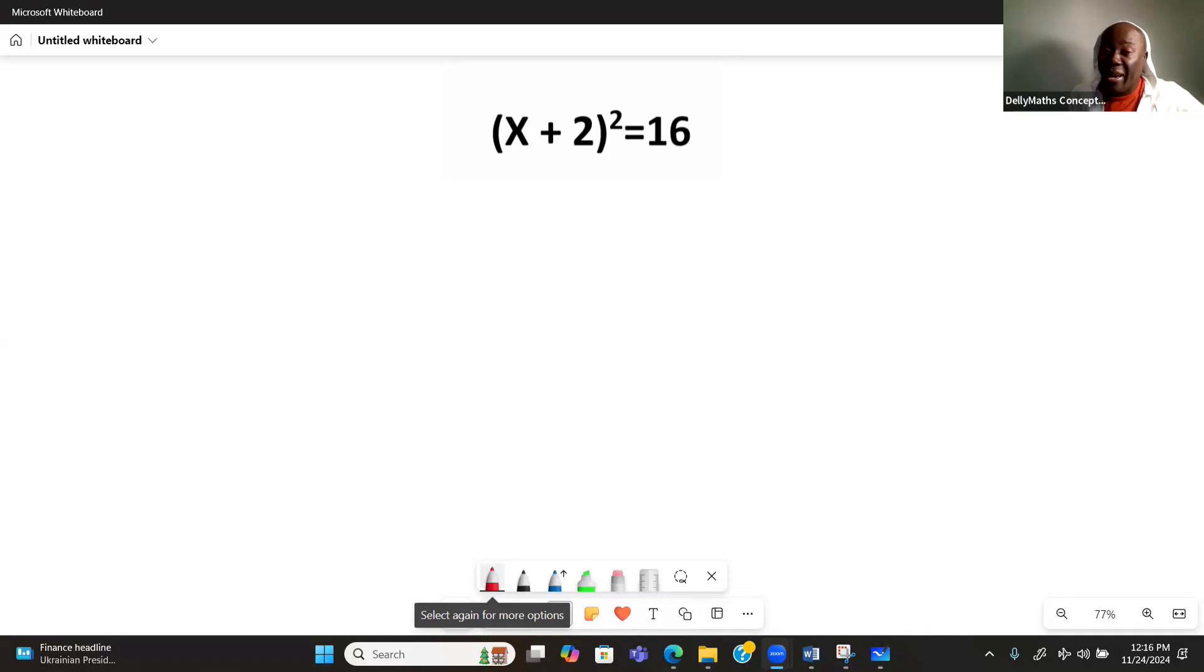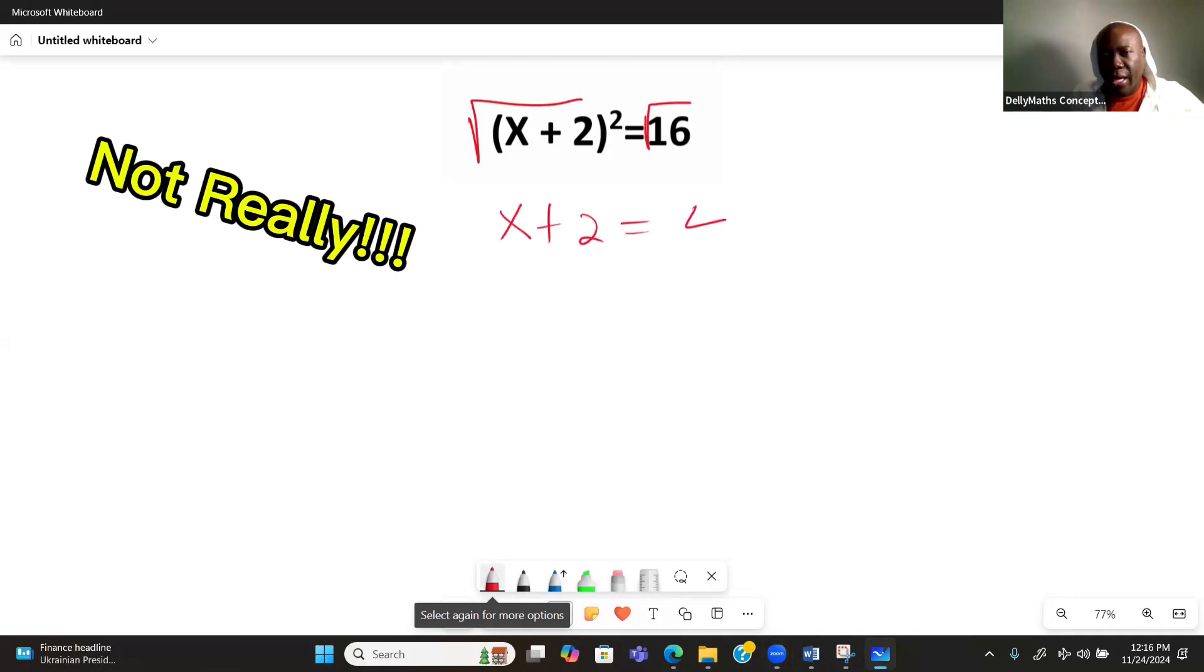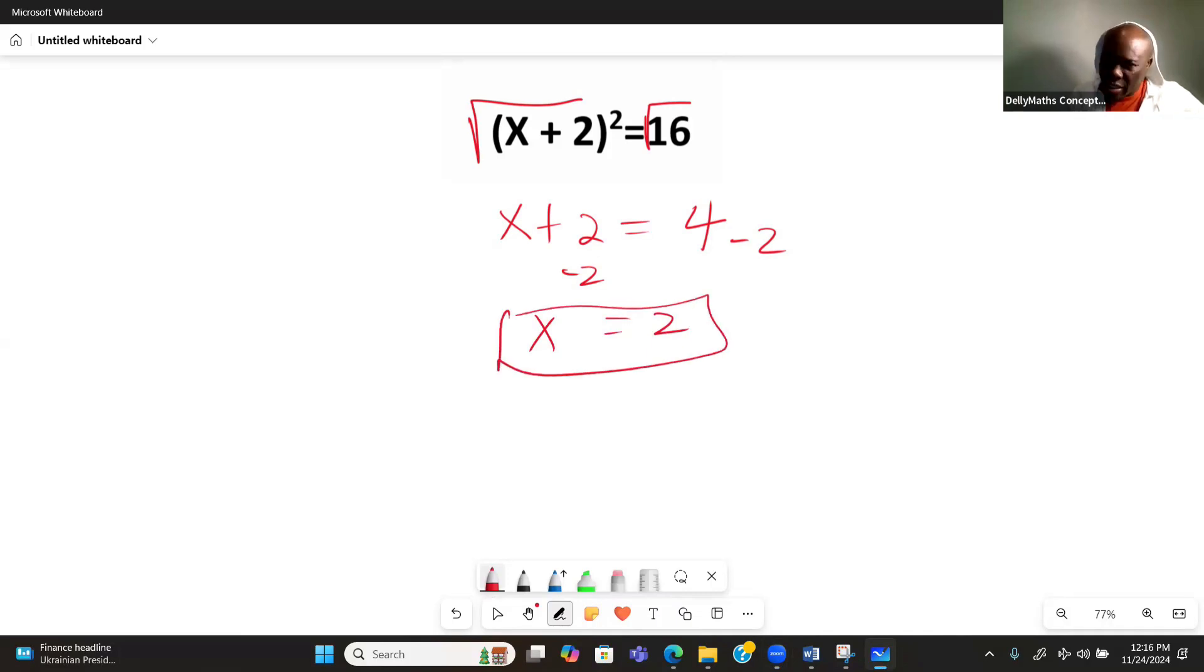A lot of times the common mistake is that whenever people are solving this, we're going to take the square root of both sides, which is good. And the mistake that is normally made is that people would say this is 4, and then they subtract, and then they get x is equal to 2. Well, this answer is not quite correct. This is like half of the answer.